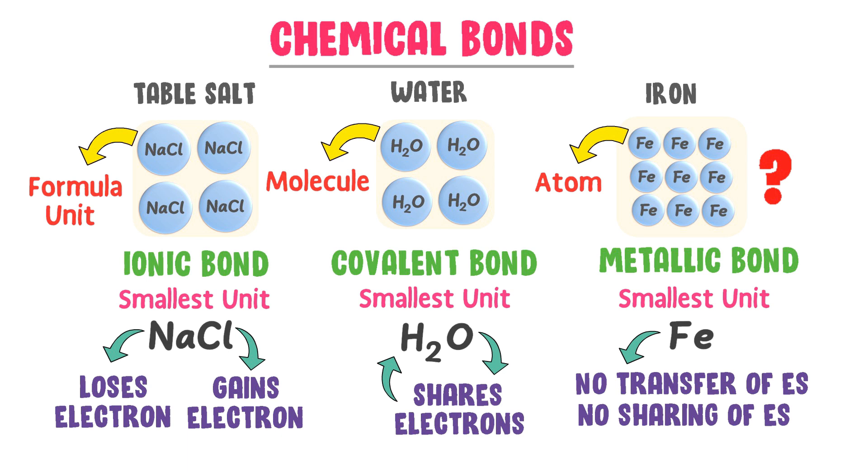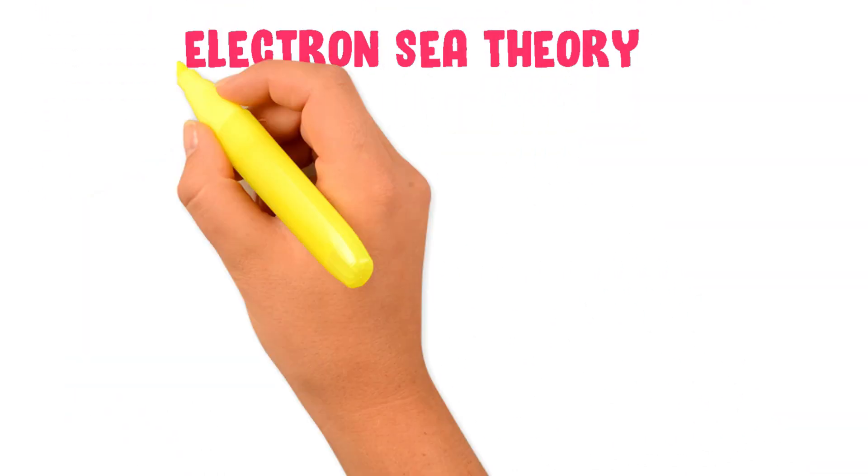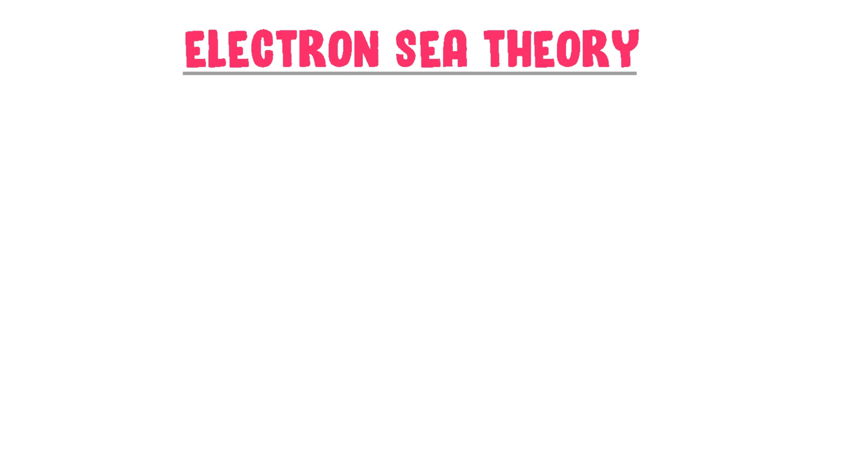Well, there are different theories that explain the metallic bonding. But the most common is electron sea theory or electron gas theory. Let consider a pure iron sheet.